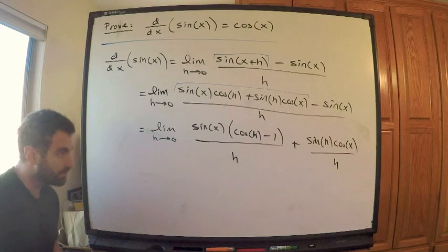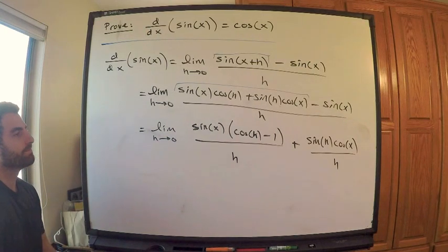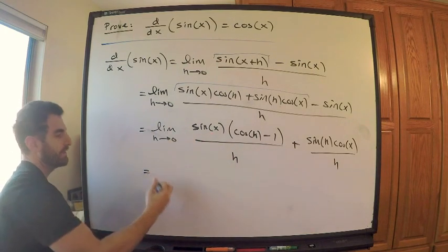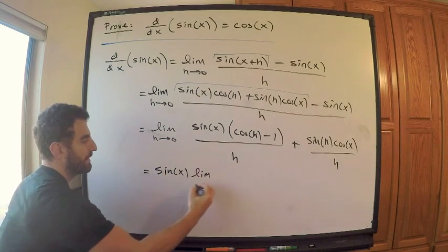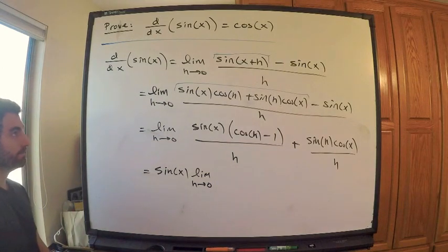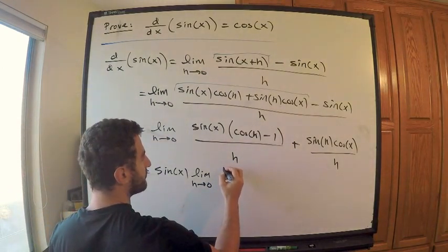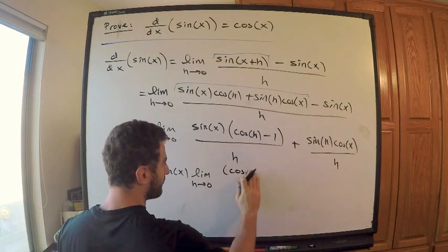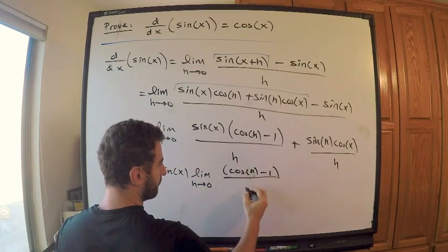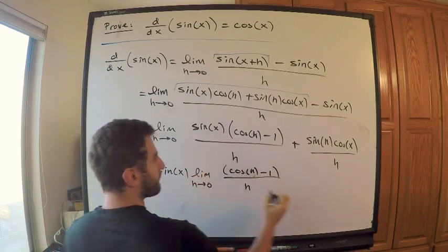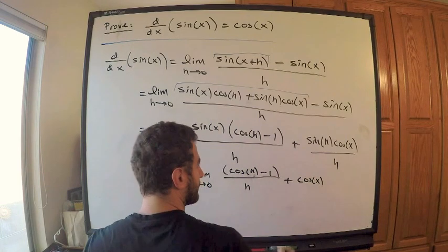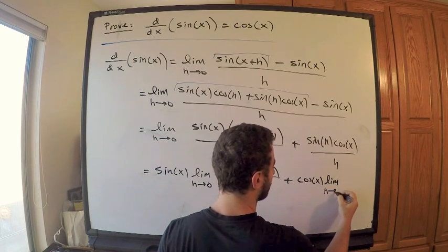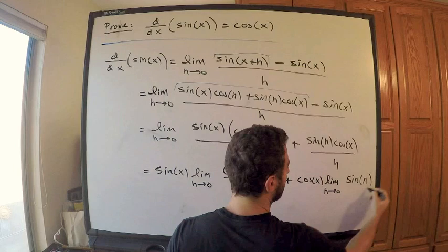This is where I need to use a couple of very special limits. So this is equal to: sine of x factored out — remember it doesn't depend on h so I can bring it out — times the limit as h tends to 0 of cosine h minus 1 all over h, plus cosine x times the limit as h tends to 0 of sine h over h. These are the two important limits.